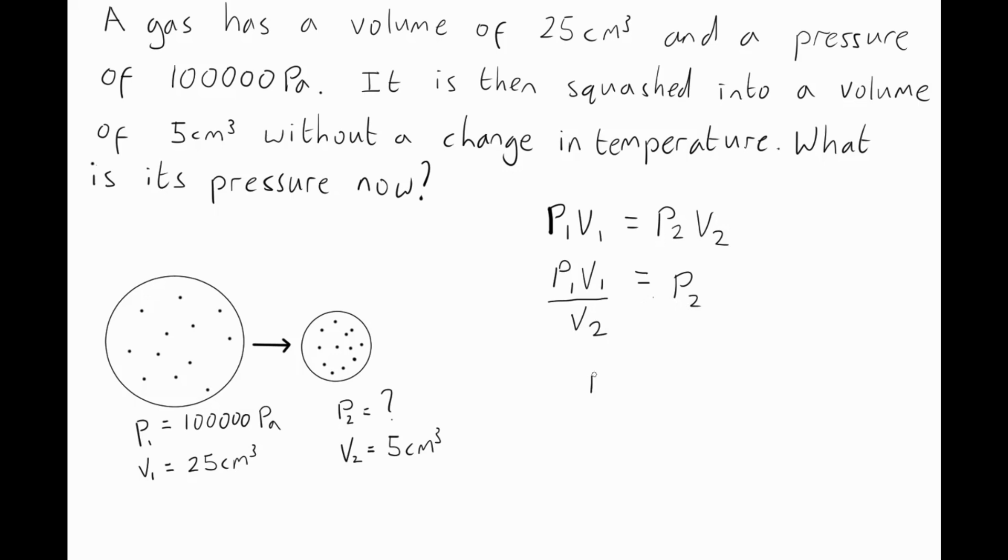I'm going to write it this way round. Pressure 2 equals, well, let's put some numbers in. Pressure 1 is 100,000 pascals and we're multiplying that by the volume 1 which is 25 centimeters cubed. The whole thing we're going to divide by volume 2 which was 5 cm cubed.